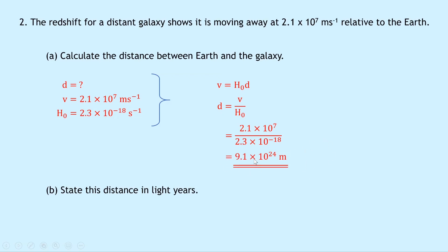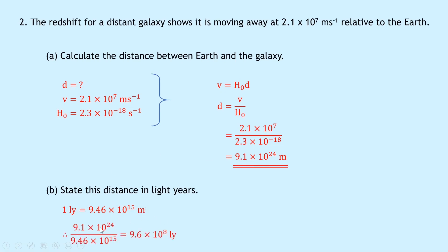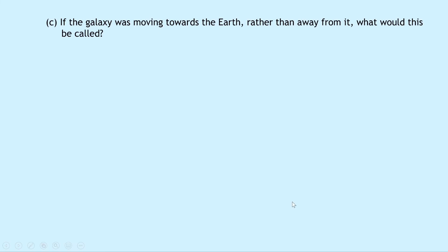So we're talking about really big distances here. Part B says to state this distance in light years. Remember, one light year is equal to 9.46 times 10 to the 15 meters — if you can't remember that, you can calculate it using speed-distance-time. To get light years we divide, since we expect a smaller number: 9.1 times 10 to the 24 over 9.46 times 10 to the 15 equals 9.6 times 10 to the 8 light years. Part C says if the galaxy was moving towards the Earth rather than away from it, what would this be called? A galaxy moving away is called redshift, so the opposite — moving towards the Earth — is called blueshift.